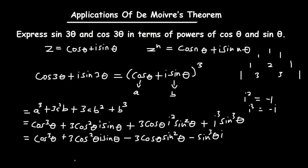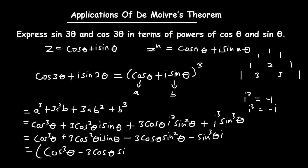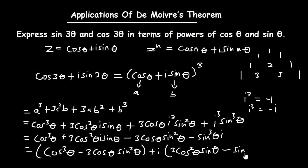Now we group the real part from the imaginary part. For the real part we have: cos cubed theta minus 3 cos theta sine squared theta. For the imaginary part we have: 3 cos squared theta sine theta minus sine cubed theta.